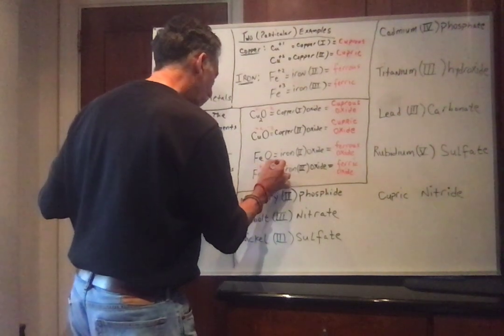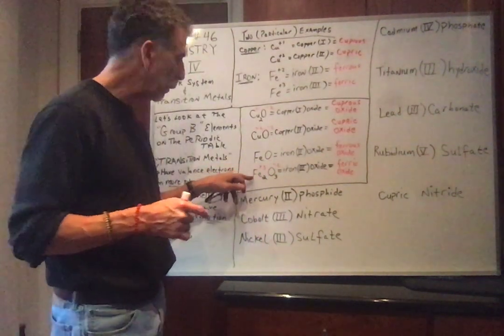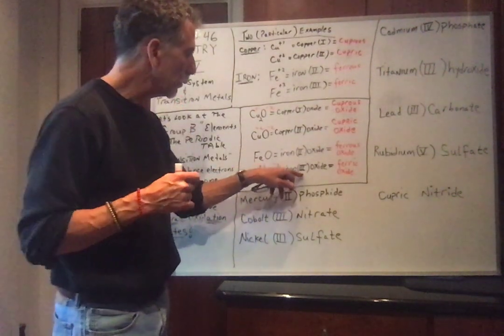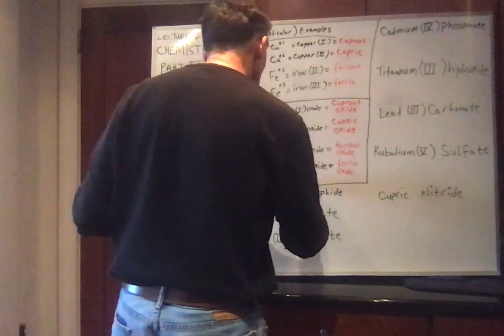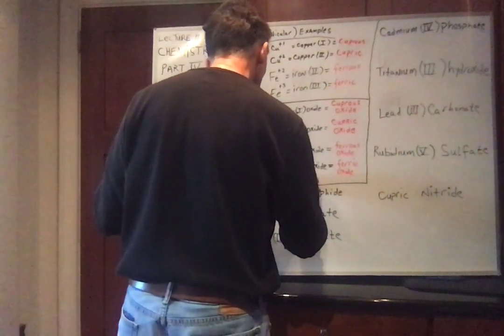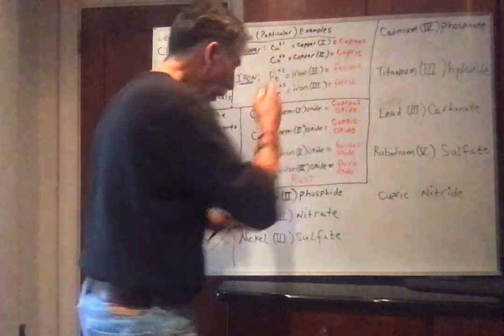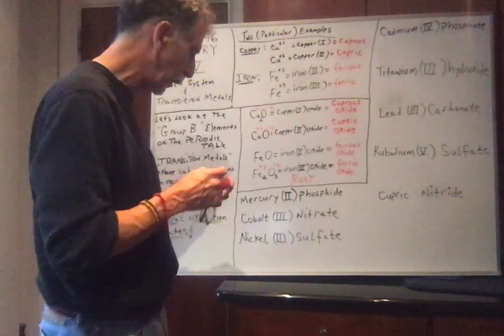And if iron had a plus 3 state, oxygen minus 2, this now gives 6 electrons, 2 times minus 2, and this takes 6 electrons. So this would be called iron 3 oxide or ferric oxide, or more commonly, this is called rust. So iron 3 oxide is rust, or ferric oxide is rust, all three are synonyms.